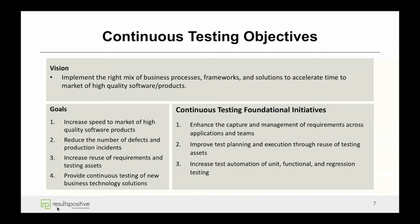When we look at overall continuous testing objectives and building blocks, we first feel that it's important for organizations to set up their vision and overall objectives. An example we see with organizations is they're looking to focus on implementing the right mix of process frameworks and technology solutions to accelerate that time to value and their overall testing activities so they can ensure high quality products.